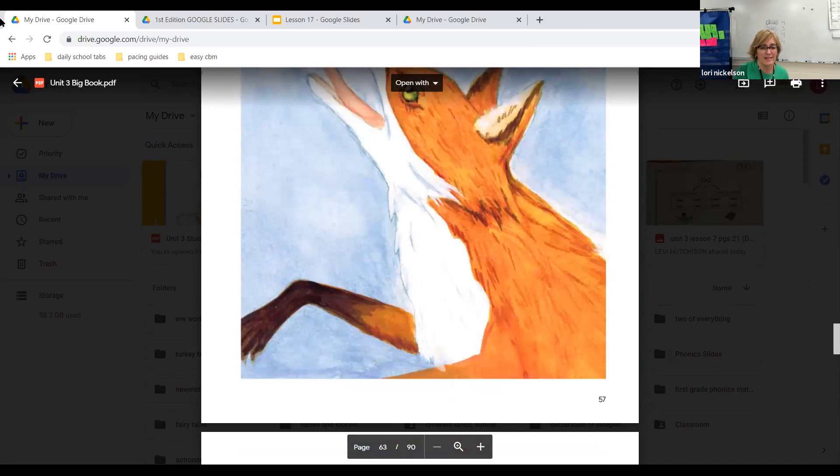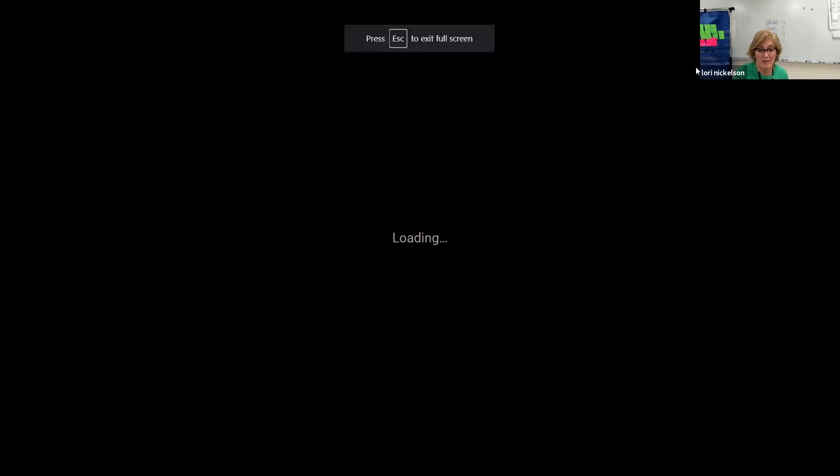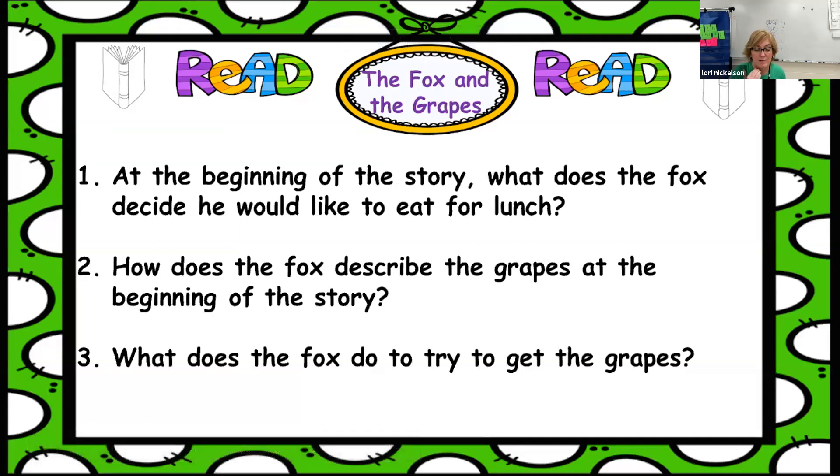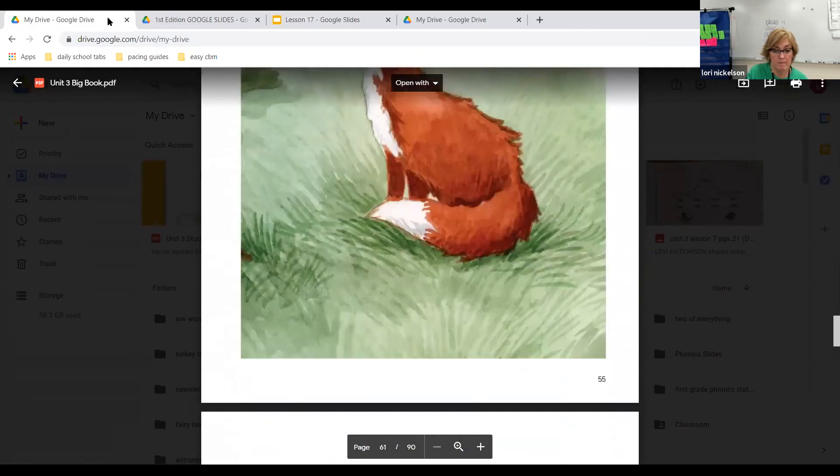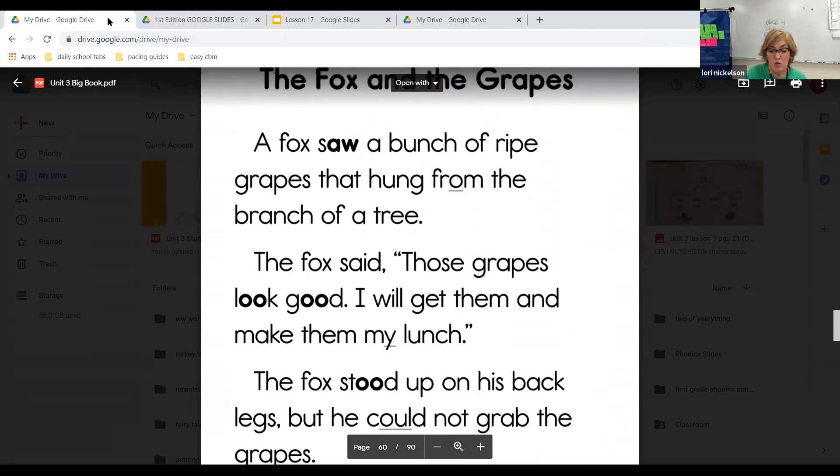Okay. So, where's my mouse? There it is. At the beginning of the story, what does the fox decide he would like to eat for lunch? Grapes. Awesome. How does the fox describe the grapes at the beginning of the story? Well, if we have to go back to the beginning of our story, let's look here. He saw a bunch of ripe grapes that hung from a tree. He said those grapes looked good. So, how did he describe them? He said they looked good, right? Okay.